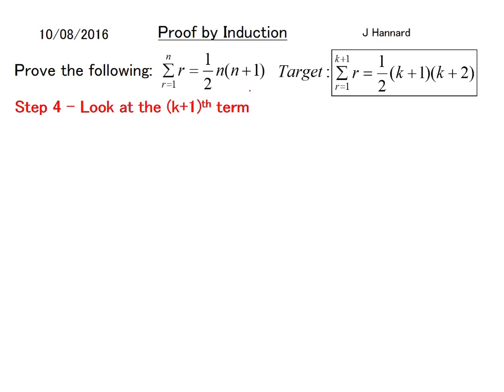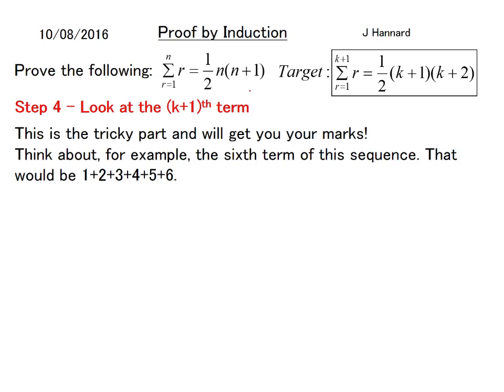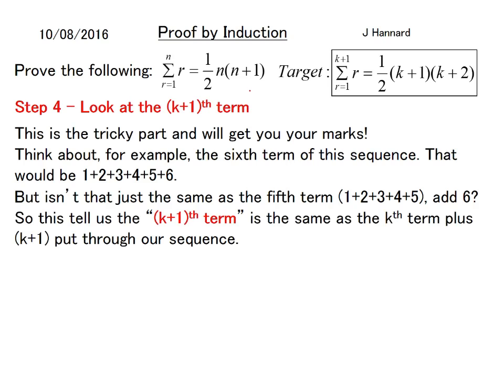Step 4 is to look at the k plus 1's term. So this is the really tricky part of induction. It's been sort of gettable to start with, and just remember practice makes perfect certainly with induction. Because you don't get it your first few examples, and then once you try a few yourself you start realizing the patterns. So think about for example the 6th term of this sequence. That would be 1 plus 2 plus 3 plus 4 plus 5 plus 6.